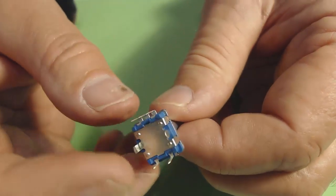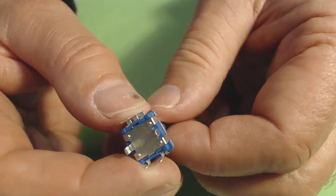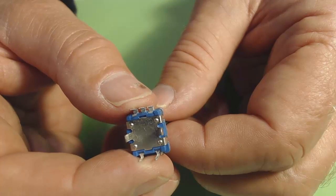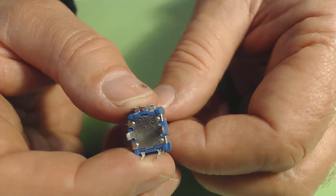On the very bottom, there's also these two lugs. They're simply there to add stability when you mount it on a printed circuit board. They have no electrical connection.